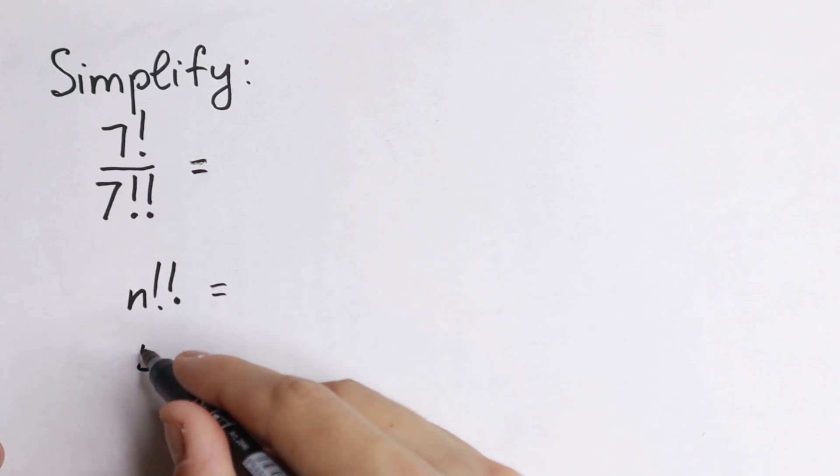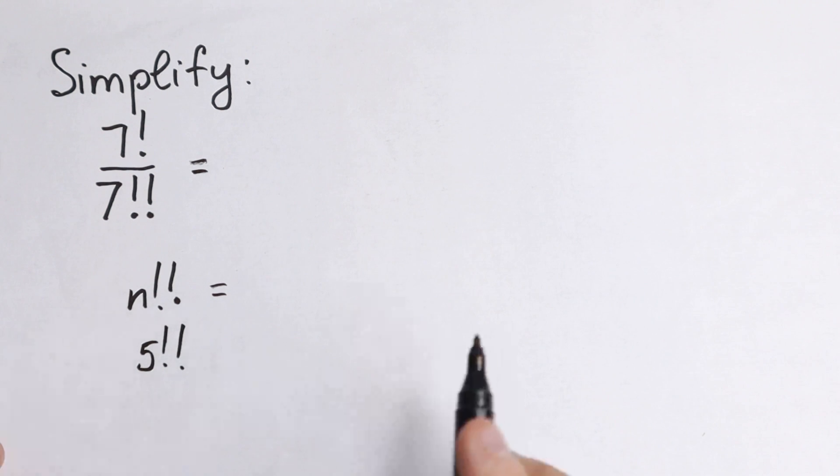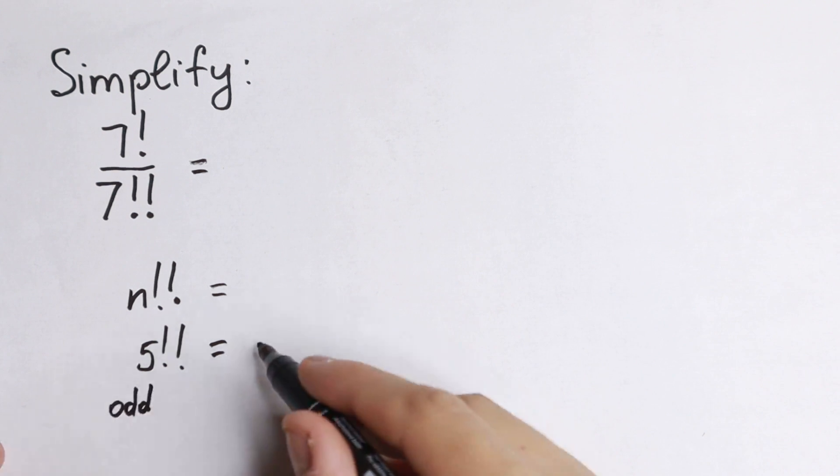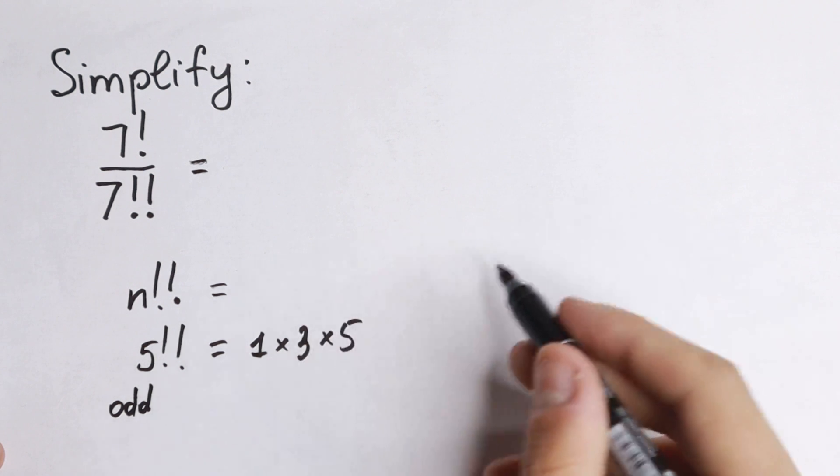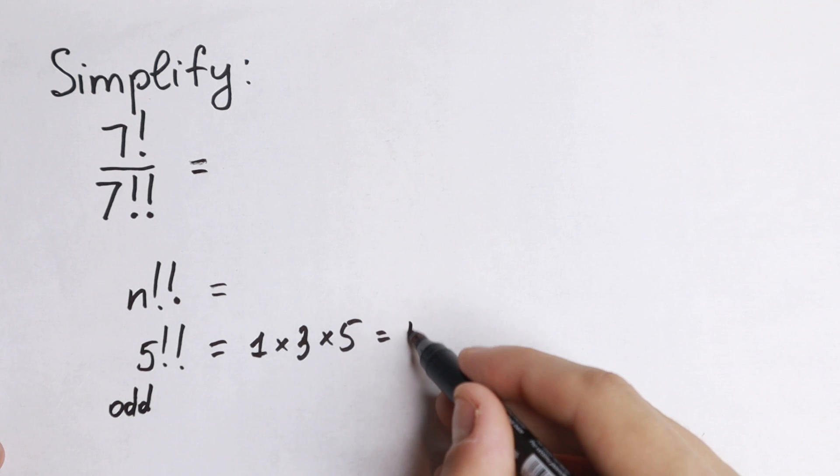For example, let's look at 5 double factorial. First, we note that 5 is an odd number. So it goes from 1 to 5, but we multiply only the odd numbers because 5 is odd. So we have 1 times 3 times 5. This is 5 double factorial, which equals 15.